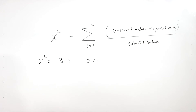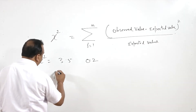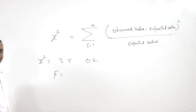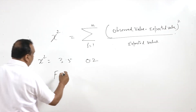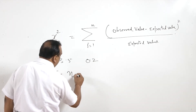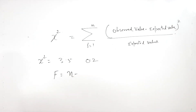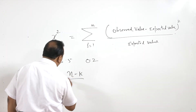After calculating the chi-square value we calculate the degree of freedom f. Here f equals n minus k, where n is the number of categories and k is the number of restrictions in the trial.